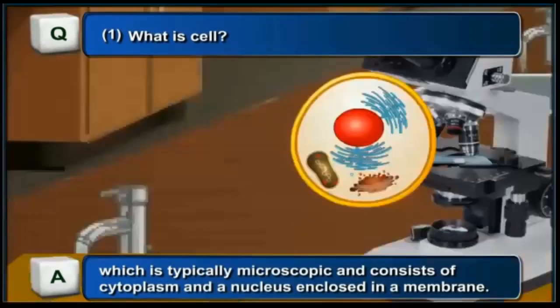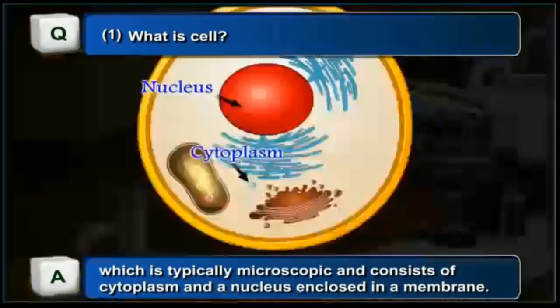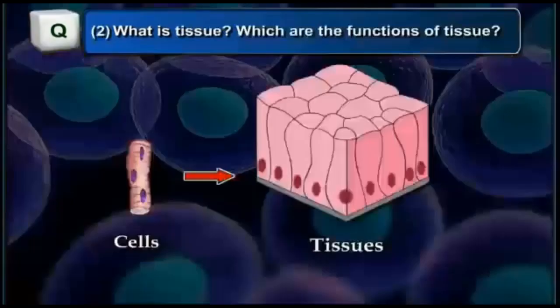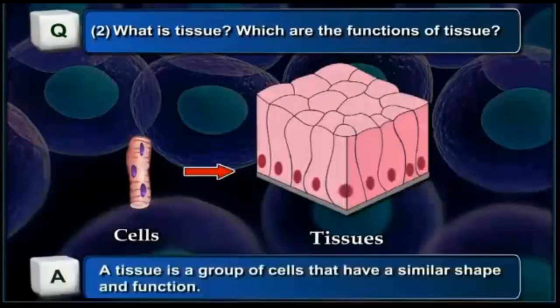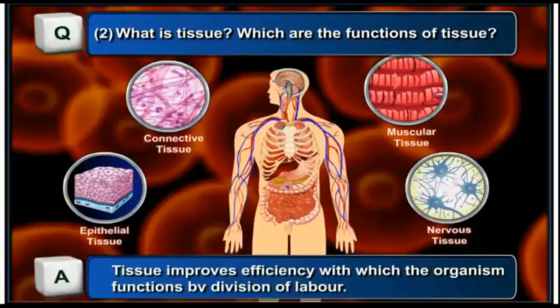What is tissue, and what are the different functions of tissue? A tissue is a group of cells that have a similar shape and function. Tissue improves efficiency with which the organism functions by division of labor. Different types of tissues form different types of organs and hence perform different types of functions.